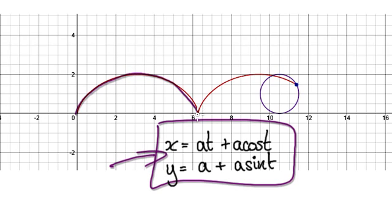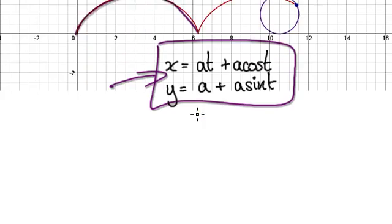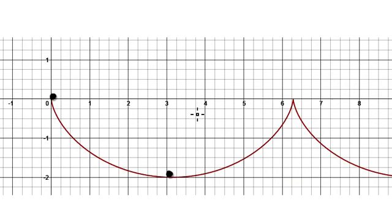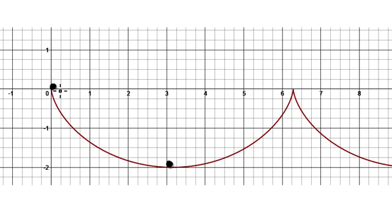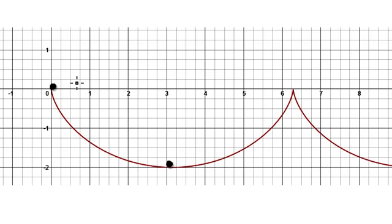Turn this cycloid upside down and you will get this — I've zoomed in as well. Now imagine you putting some sort of marble, bead, or particle on this frictionless path. Because it's frictionless, it's going to fall all the way down and then rise right back up to the top.